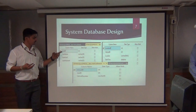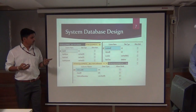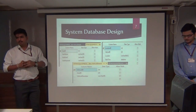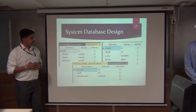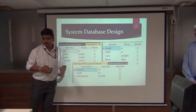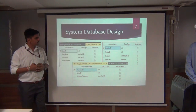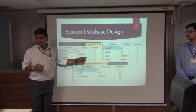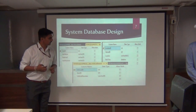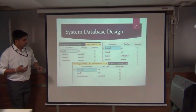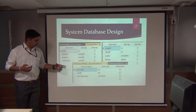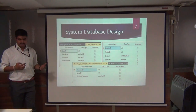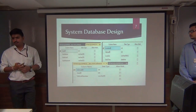In the user details table, user ID is given a foreign key. For the location table, there are four properties: location ID, vehicle ID, location, and date and time. For vehicle details, there are three properties: vehicle details, user ID, and vehicle number.